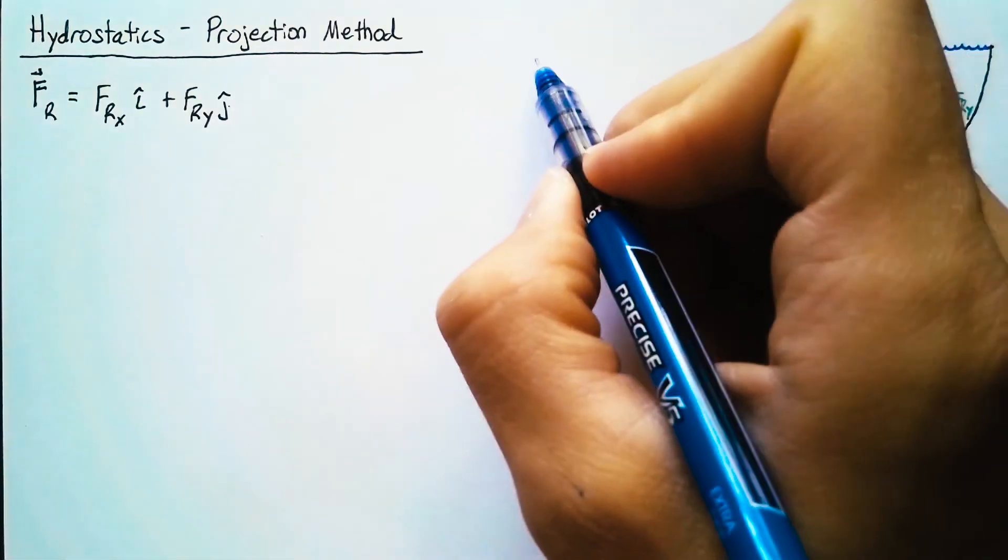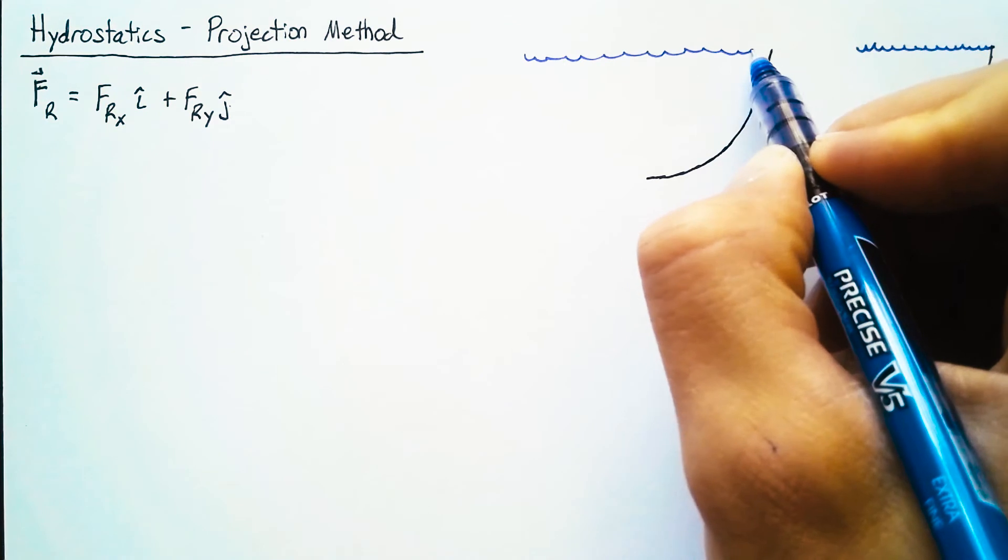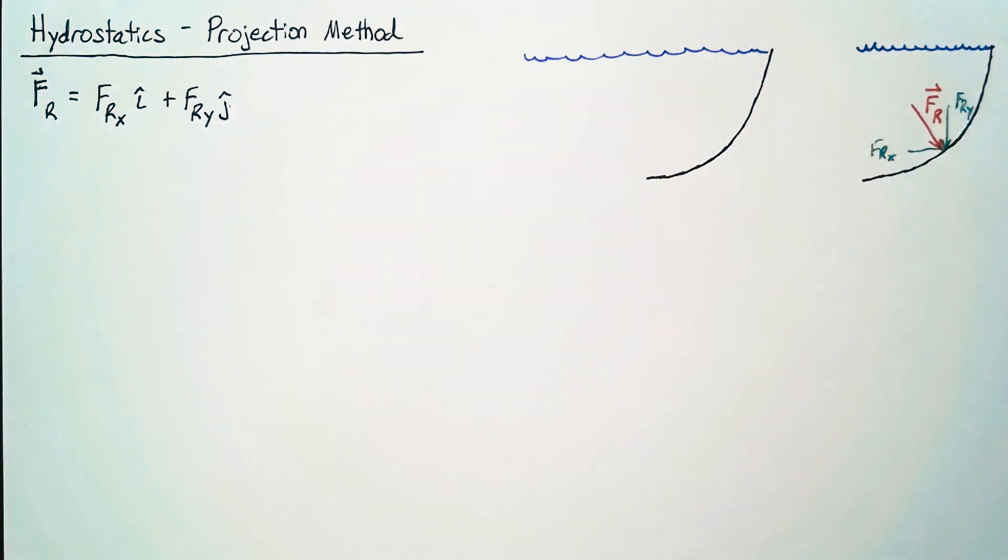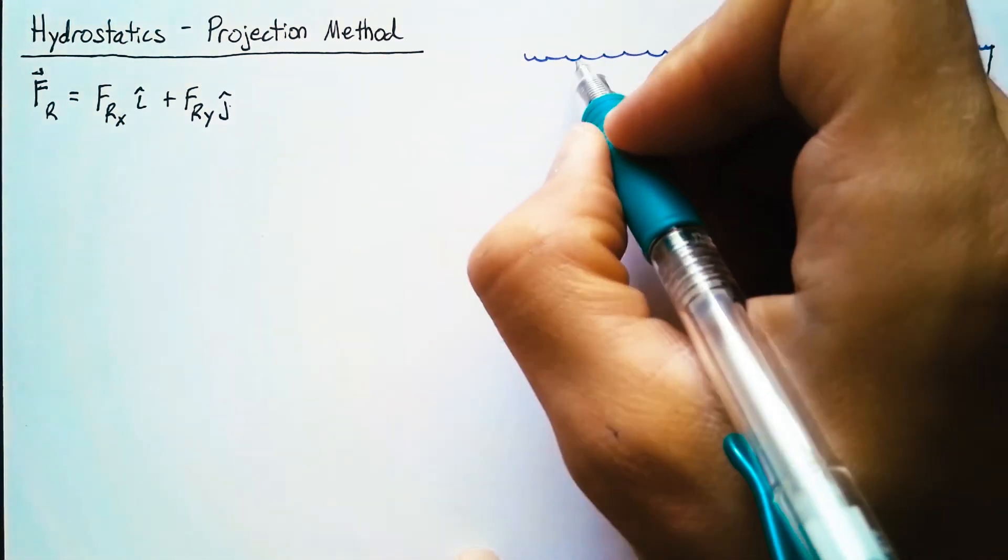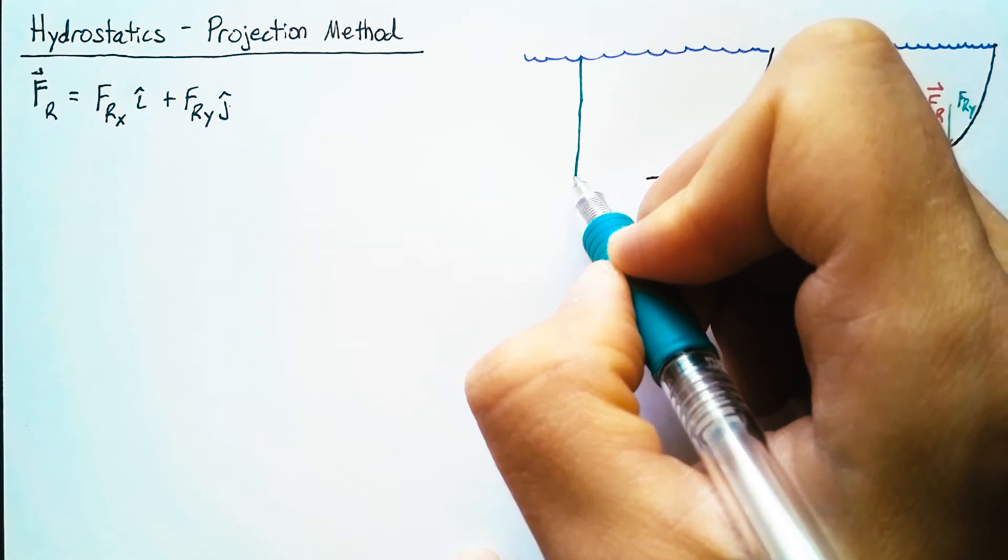This time we're going to extend out the water a little bit further. The black line is still going to be our wall that we're interested in, but of course the water is going to continue on. We're going to draw another wall that's vertical over here to the left of our wall.